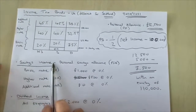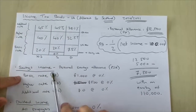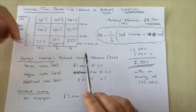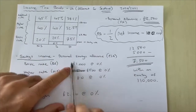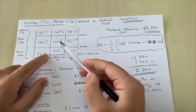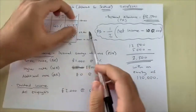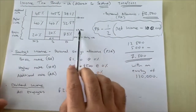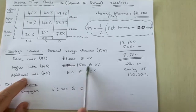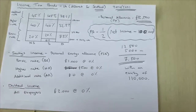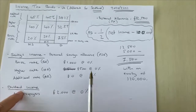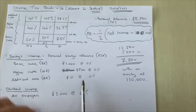For savings income such as interest, you're entitled to a personal savings allowance. If you're a basic rate earner — not exceeding the 20% tax band — you have a £1,000 savings allowance taxed at 0%, not at 20%, 40%, or 45%. If you're a higher rate taxpayer, you'll have an allowance of £500 at 0%. Unfortunately, additional rate taxpayers have no allowance and will be taxed on their full savings income.